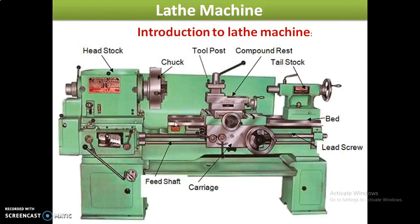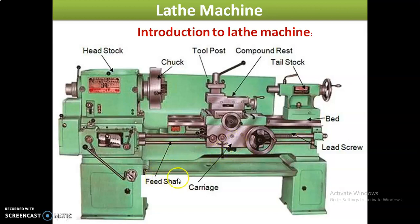This is the general diagram of the lathe machine. The parts visible here include the headstock, tool post — where we generally place the cutting tool — compound rest, tailstock, bed, lead screw, carriage, and feed rod. I will explain these parts in detail in the next slide.